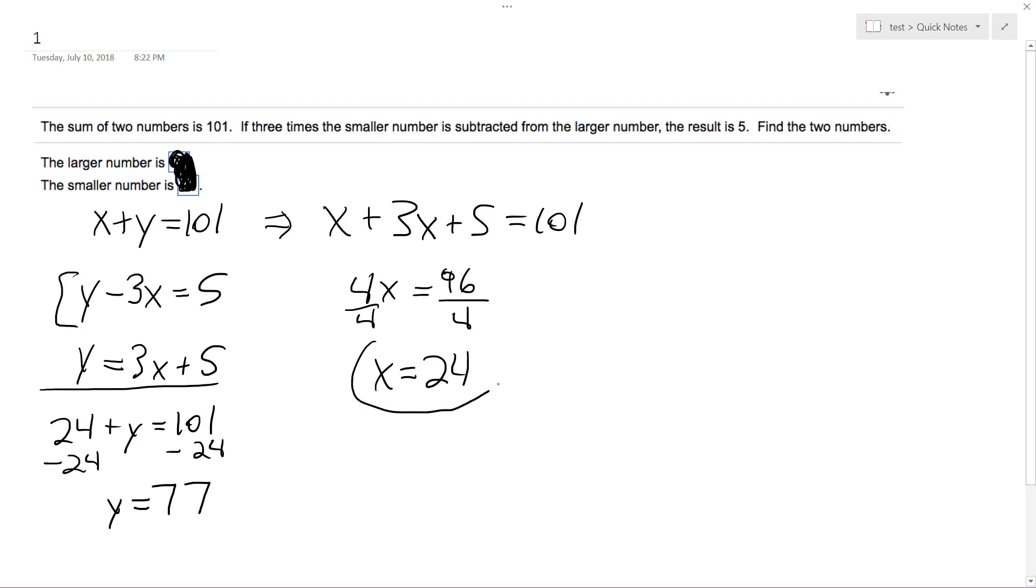So the larger number is 77 and the smaller number is 24. And that's it. I hope this helped you out. Thanks for watching and have a great day.